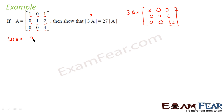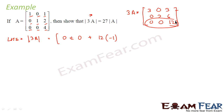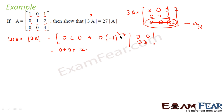Now let me find LHS, which is the determinant of 3A. Expanding along the third row (which has two zeros): the only non-zero contribution is 12 into (−1)^(3+3). Removing row 3 and column 3 gives the 2×2 matrix [3, 0; 0, 3]. Determinant is 12 into 1 into (3×3 − 0×0) = 12 into 9 = 108. So LHS is 108.